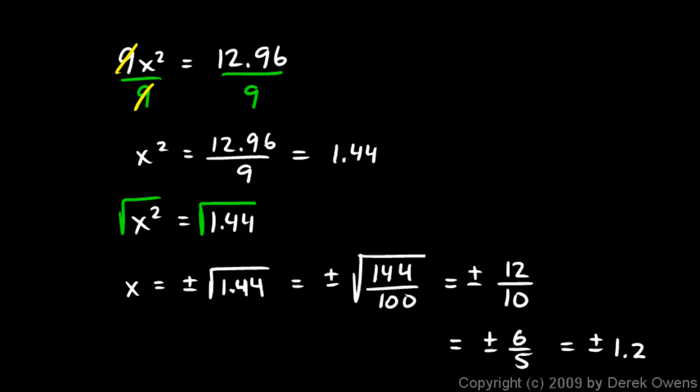Your teacher might tell you to leave your answer as a fraction or leave it as a decimal, so do what you're told if it's specified in the problem. But those are both the correct answers. Note that there are two answers: positive 6 fifths and negative 6 fifths, or if you want to write it that way, positive 1.2 and negative 1.2.